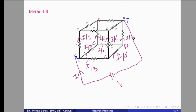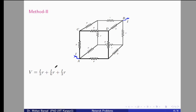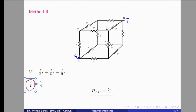Now we apply KVL. We know the current in all branches: I/3 in the A-to-C section, I/6 in the C-to-D section, and I/3 in the D-to-B section. Applying KVL: V = (I/3)R + (I/6)R + (I/3)R. Therefore V/I = 5R/6. Since V/I is the equivalent resistance R_AB, the equivalent resistance between A and B is 5R/6. Thank you for watching this video.